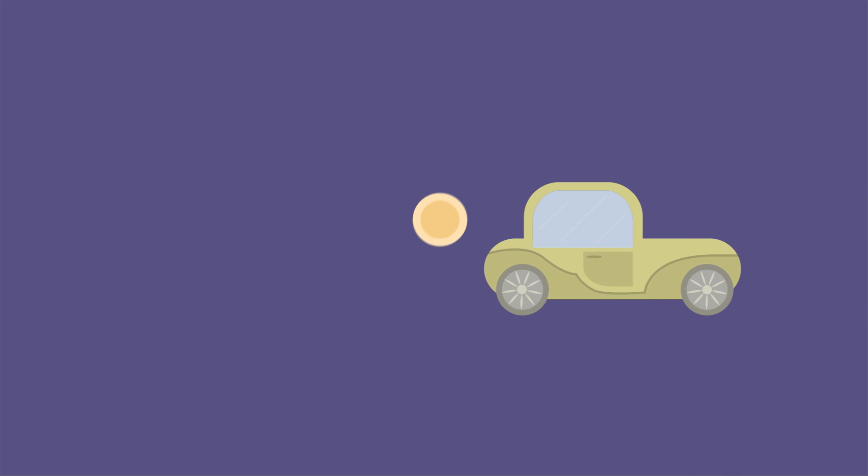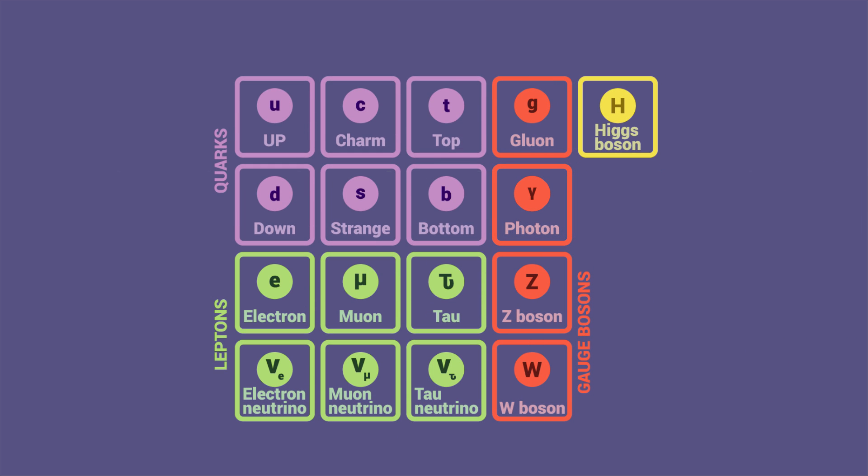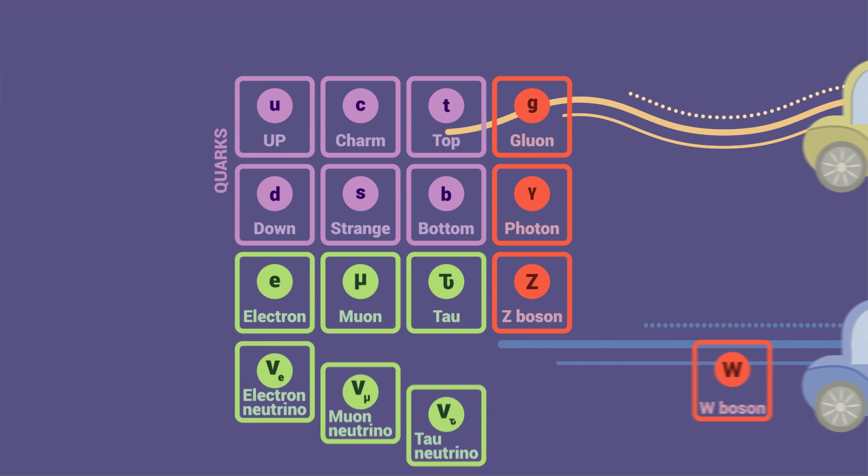Photon is an elementary particle. It is like a transportation vehicle for electromagnetic forces. Like all elementary particles, photons are best explained by quantum mechanics, because they exhibit wave-particle duality. Considering that photons don't have mass,